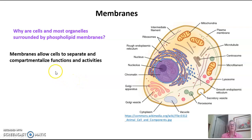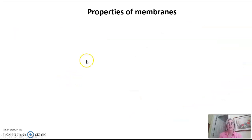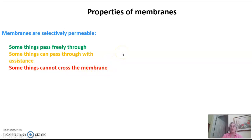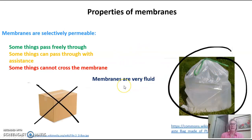The function of these membranes is that it allows cells to separate and compartmentalize functions and activities. It allows for specialized regions of the cell in terms of function. Membranes are selectively permeable — this is really important. Some things can pass freely through a membrane, some things can only pass through with assistance, and some things can't pass through a membrane at all. Membranes are also very fluid; they're much more like a baggie than a box.